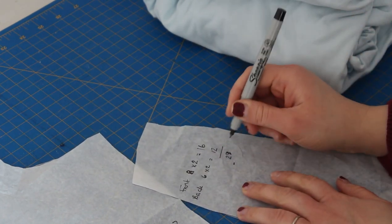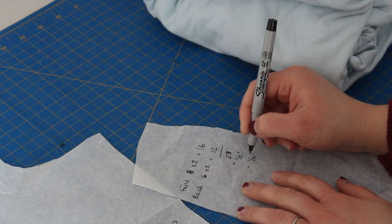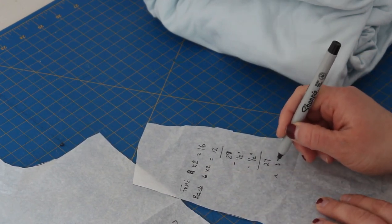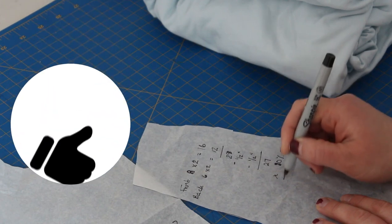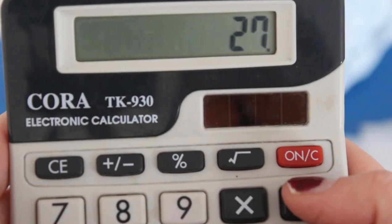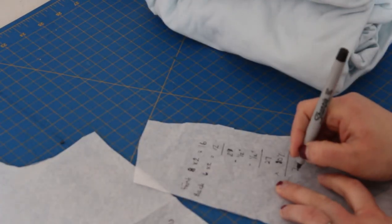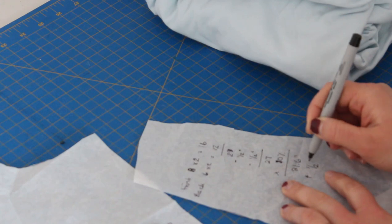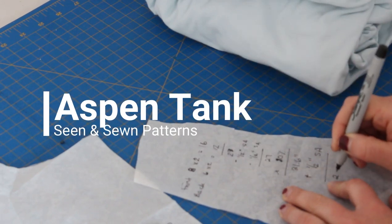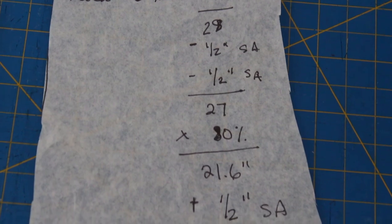Once you have your seam allowances subtracted, in this example I'm left with 27 inches and I'm going to multiply that by 80%. I'm using 80% because I'm using a cotton lycra with relatively good stretch. If you're using something stretchier, you'll use less of a percentage, and if it's less stretchy you will use a higher percentage so that the piece ends up being longer. Once you have that number, then you need to add seam allowance for your band itself. I like to use a quarter inch seam on each side, so that equals a half inch. So now I'm adding a half inch to my 21.6 inch measurement to give me 22.1 inches.